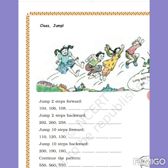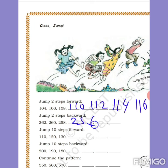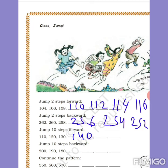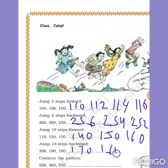Class jump: teacher says jump two steps forward: 104, 106, 108, 110, 112, 114, 116. Two steps backward: 262, 260, 258, 256, 254, 252. Ten steps forward: 110, 120, 130, 140, 150, 160, 170 and so on. Ten steps backward: 200, 190, 180, 170, 160, 150, 140, 130, 120, 110 and so on.